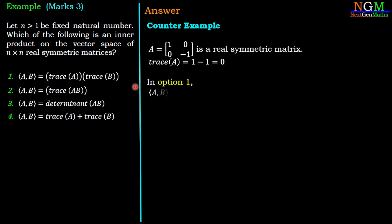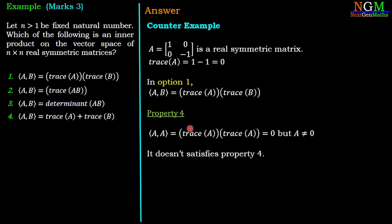In option 1, we have ⟨A,B⟩ = (trace A)(trace B). So by property 4, ⟨A,A⟩ = (trace A)(trace A). But trace(A) = 0, so ⟨A,A⟩ = 0, but A is non-zero. The fourth property says that if ⟨A,A⟩ = 0, then A must be 0. So it does not satisfy the fourth property. Thus, the first option is not an inner product. So option 1 is the wrong answer.